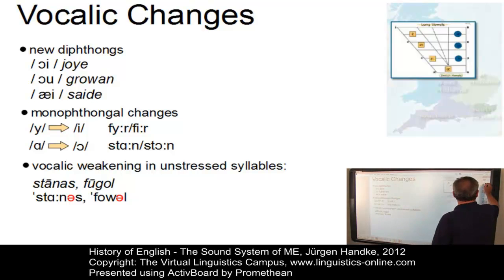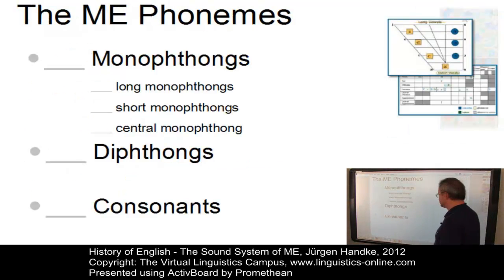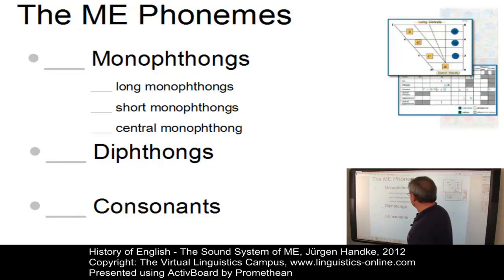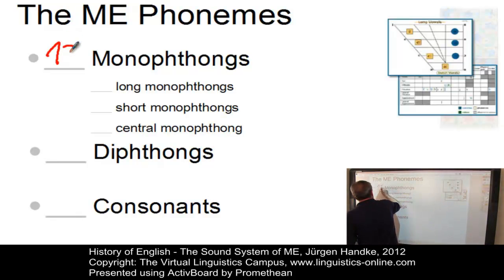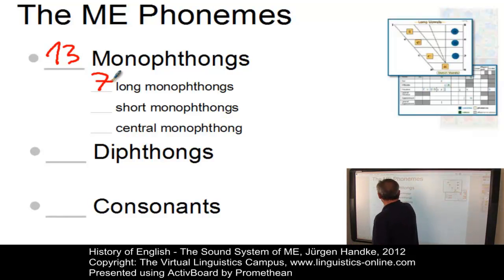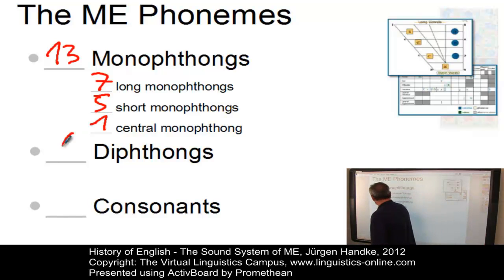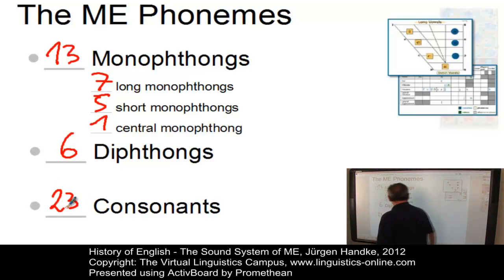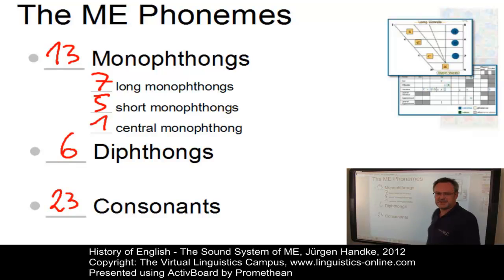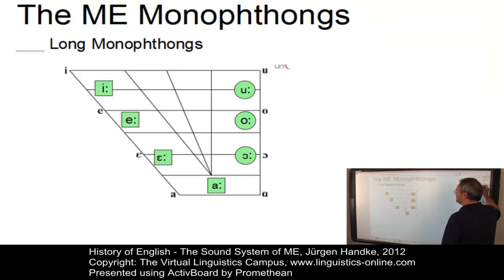Let's now look at the phonemes of Middle English in detail. There were, first of all, 13 monophthongs: seven long ones as in Old English, five short monophthongs, and one central monophthong. The number of diphthongs was now six, and there were 23 consonantal phonemes in Middle English.